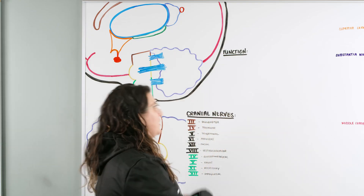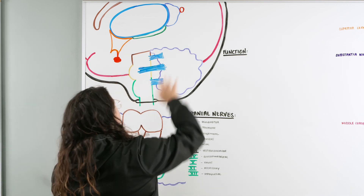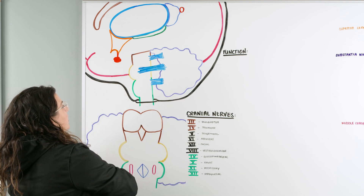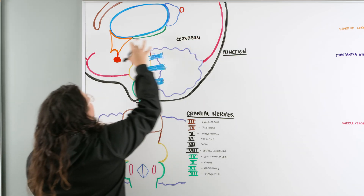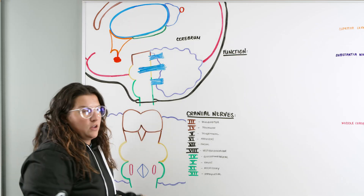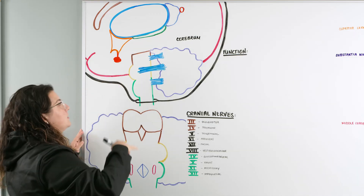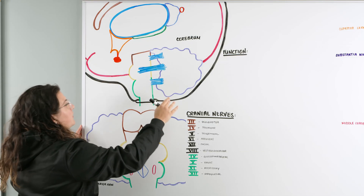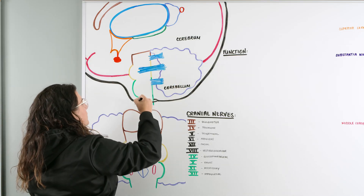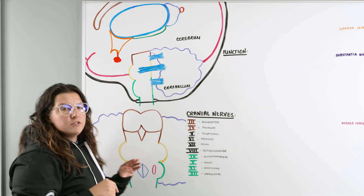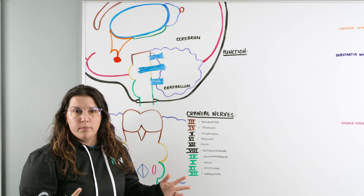As we talk about the brainstem, we're going to quickly run over what we've covered so far in our neuro series. We have the big pink portion, which is our cerebrum. We have the diencephalon in the middle, which includes our thalamus, hypothalamus, pineal gland, and pituitary gland — all covered in a previous video. We've also talked about the cerebellum. The portion we're focusing on today is our brainstem, which has three primary parts, shown here in three different colors.